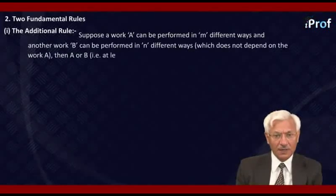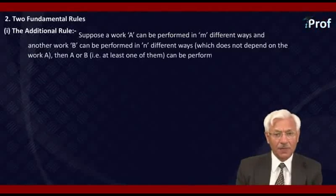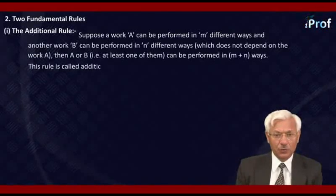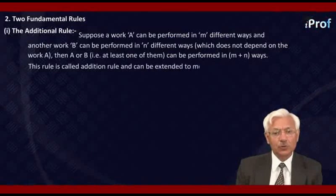Then A or B, that is at least one of them, can be performed in m+n ways. This rule is called addition rule and can be extended to more than two mutually exclusive events.